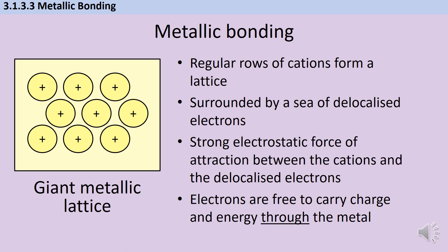The particles in a metal form a giant metallic lattice. This is made up of regular rows of cations or positive ions, which are formed when the atoms in the metal have lost their outer shell or valence electrons. These electrons become delocalised, which means that they're not associated with a particular atom. They're free to move and form a sea.